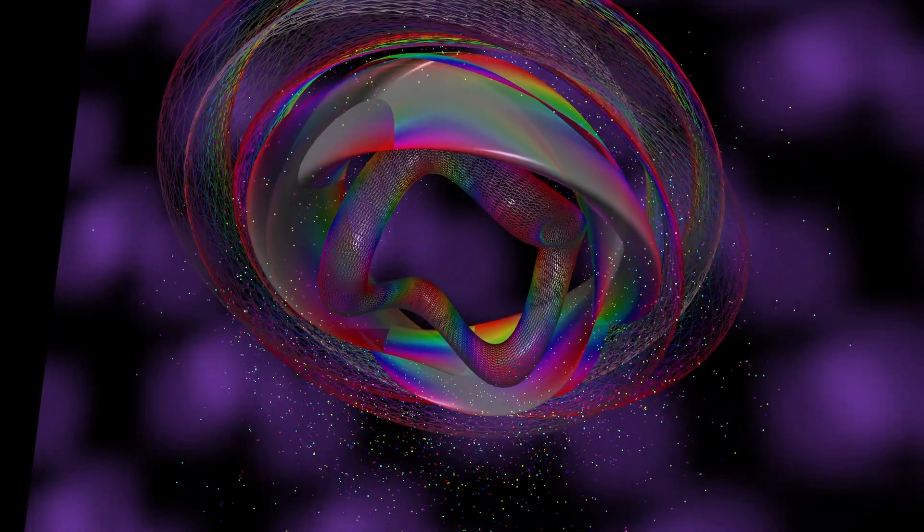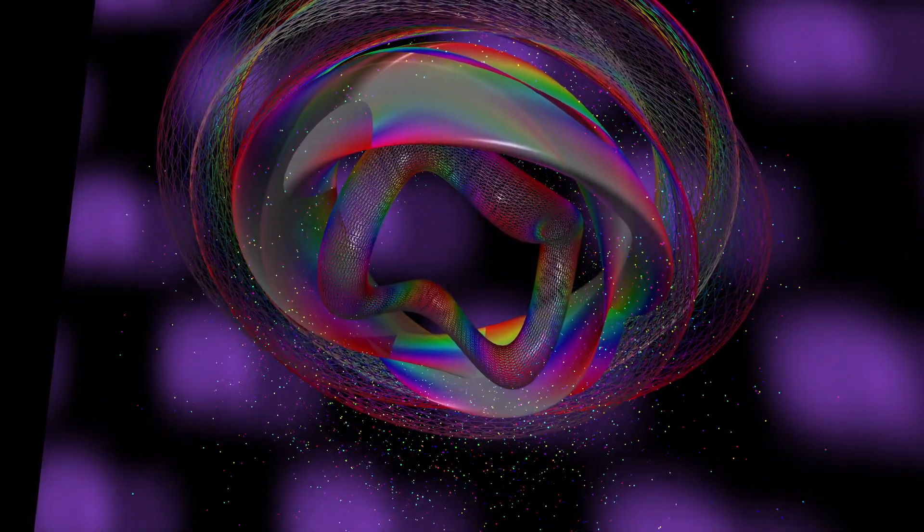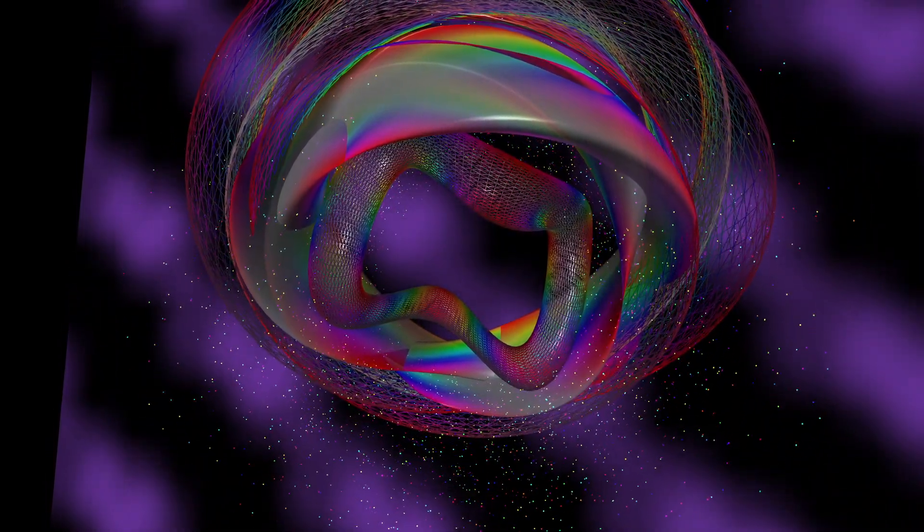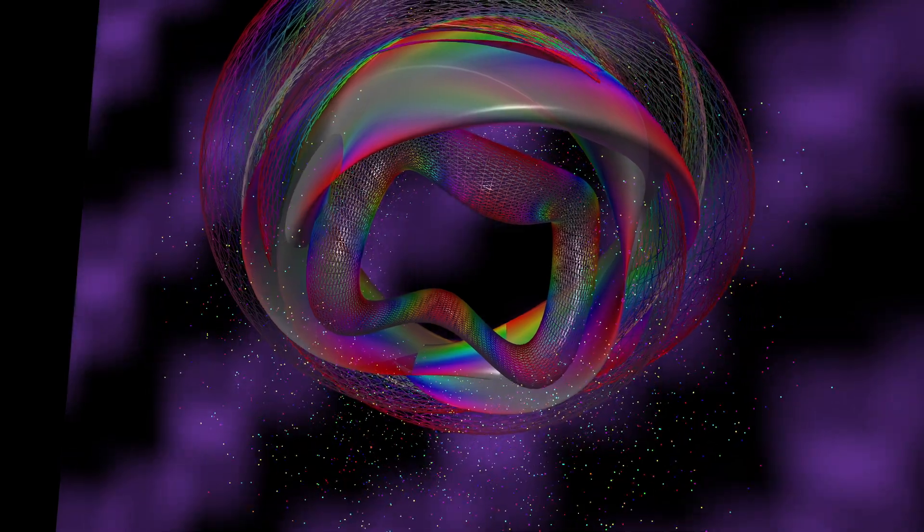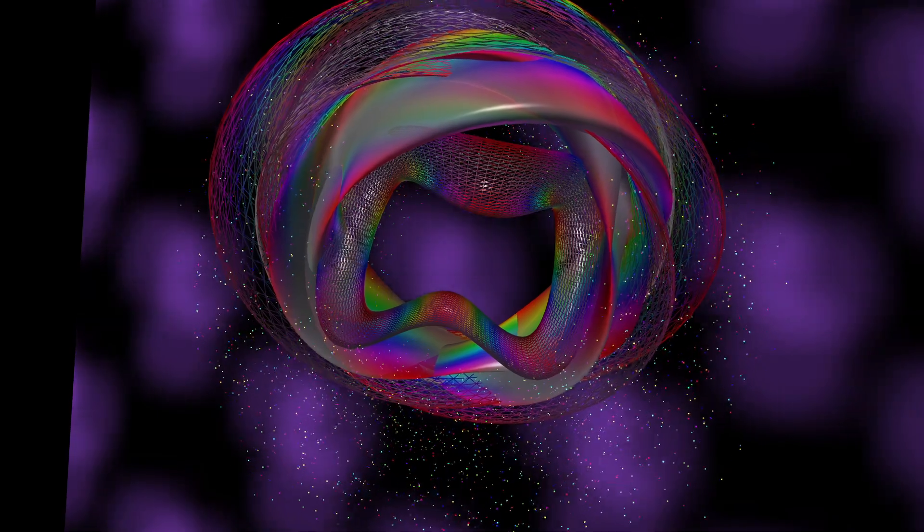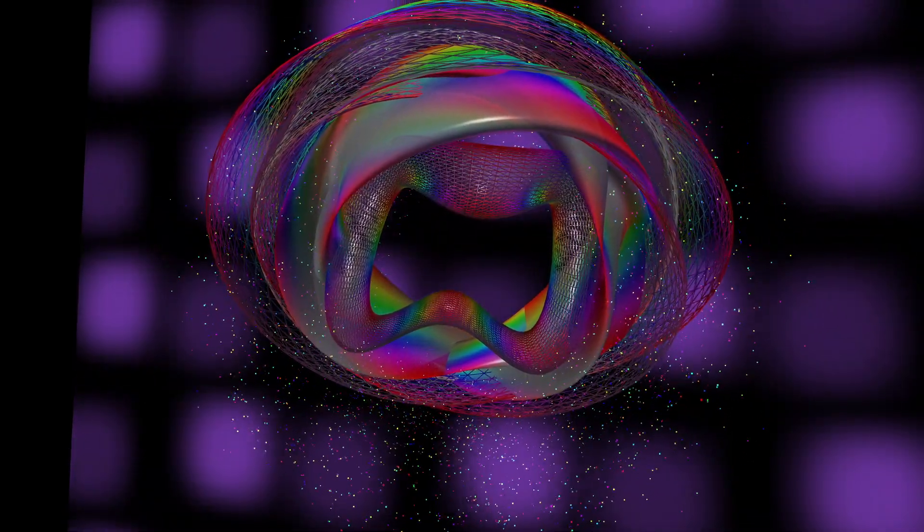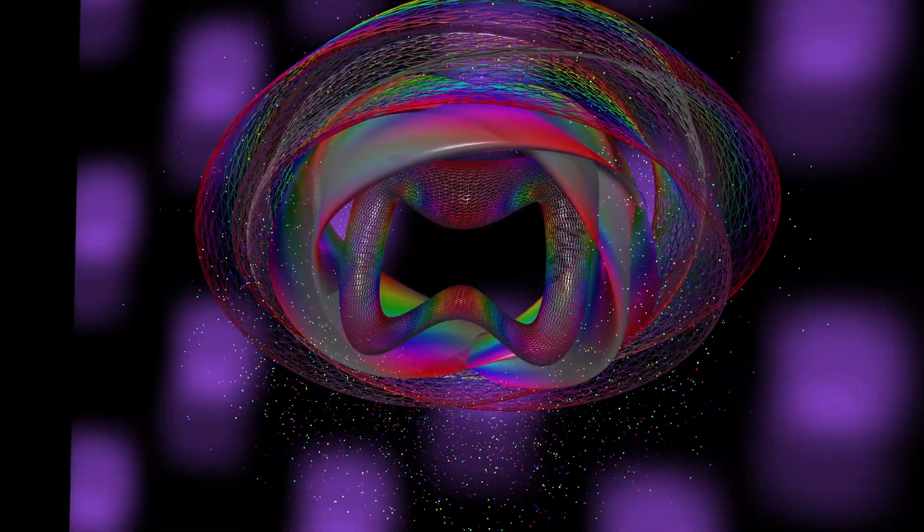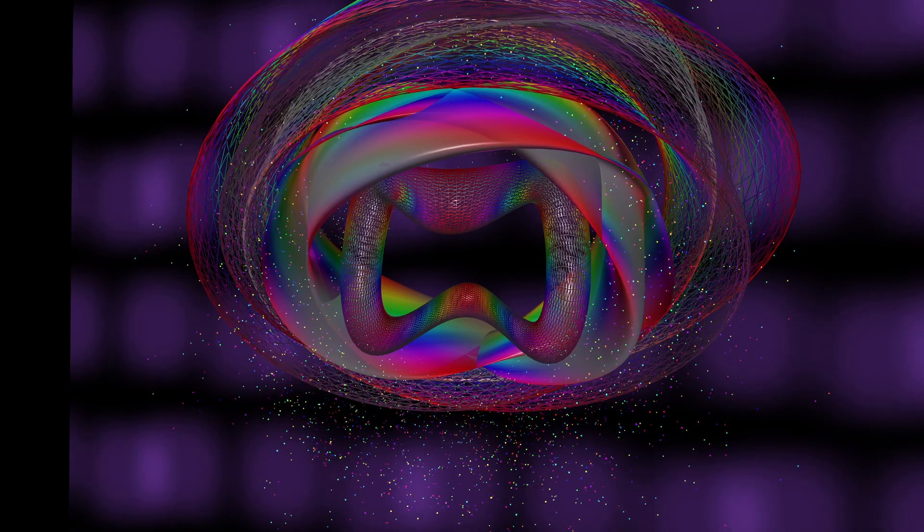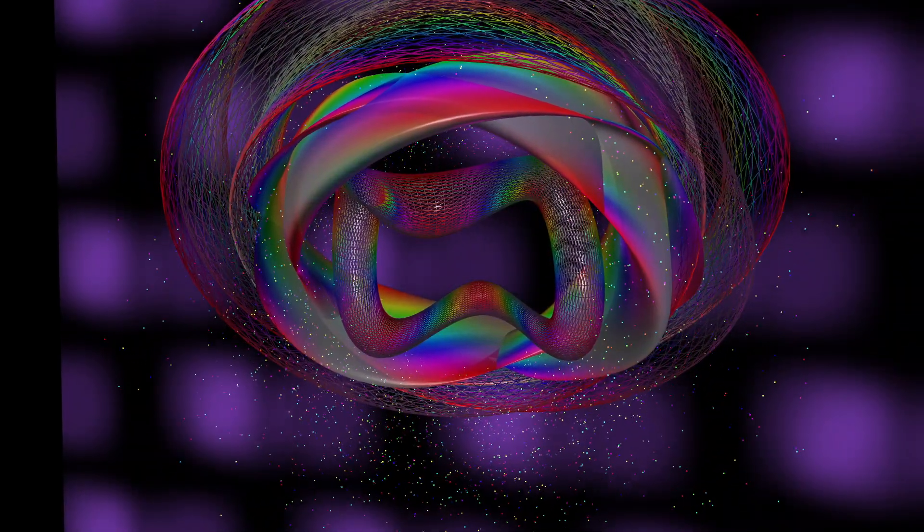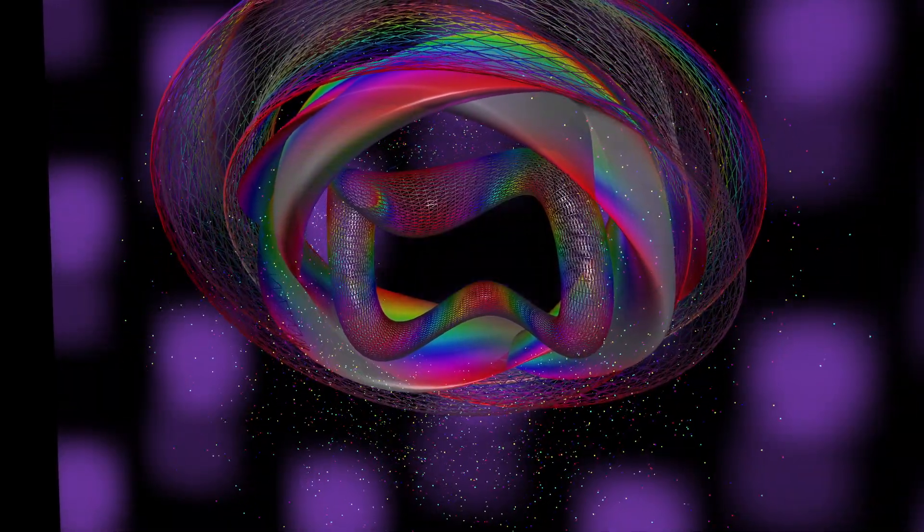So are these extra dimensions just really, really small? That's one possibility. Some theories suggest that extraspatial dimensions could be curled up at extremely small scales, billions of times smaller than an atom. So tiny that we haven't been able to detect them directly. But if they exist, they could influence the behavior of particles in our universe. So they're hidden from our view, but their effects could be measurable.